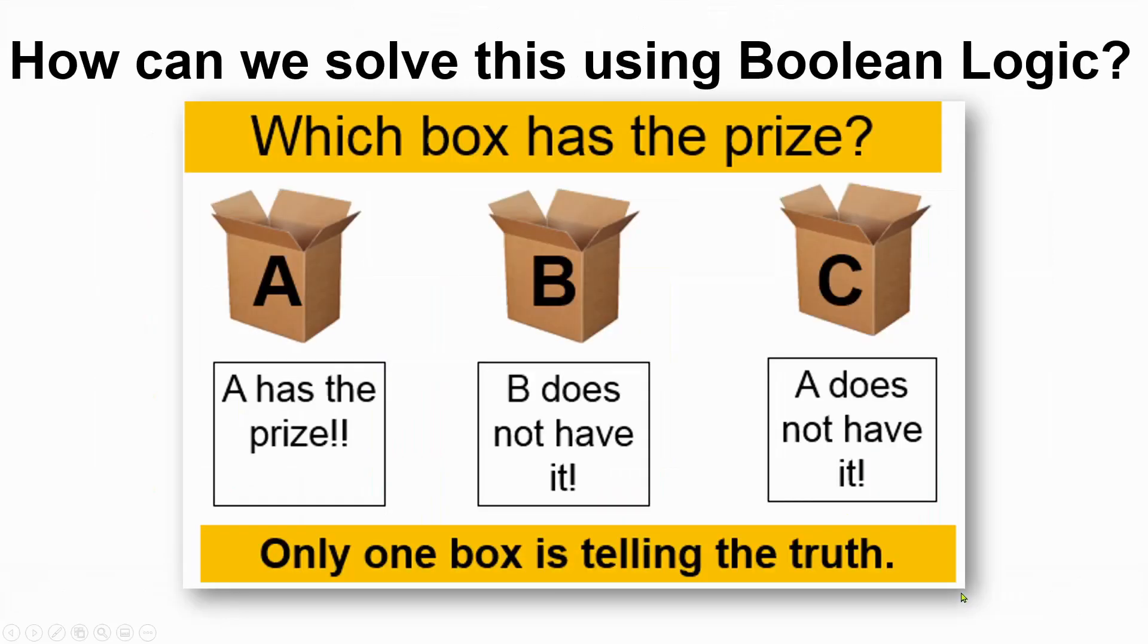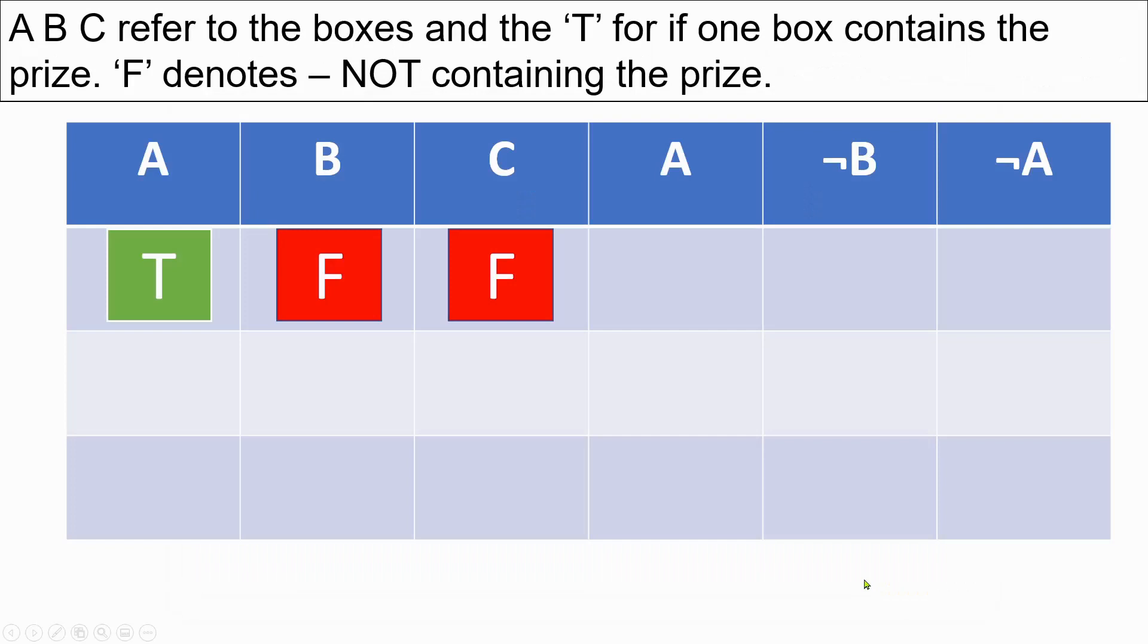Now, let's come back to this prize problem. How can we solve this using Boolean logic? Only one box, as we remember, is telling the truth. If you look at this truth table, I've got the inputs here, A, B, and C. A, B, and C refer to the boxes, and the T is for if one box contains the prize. So in this case, we can see that A contains the prize. F denotes NOT containing the prize.